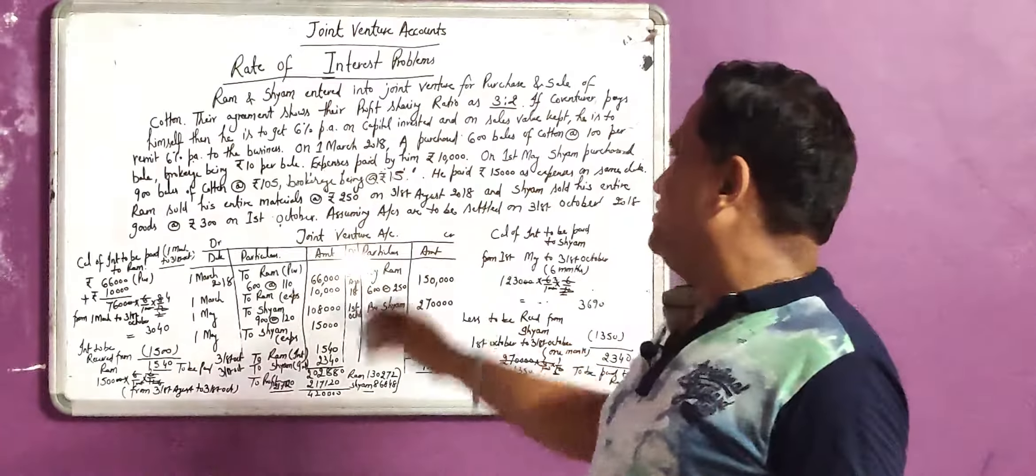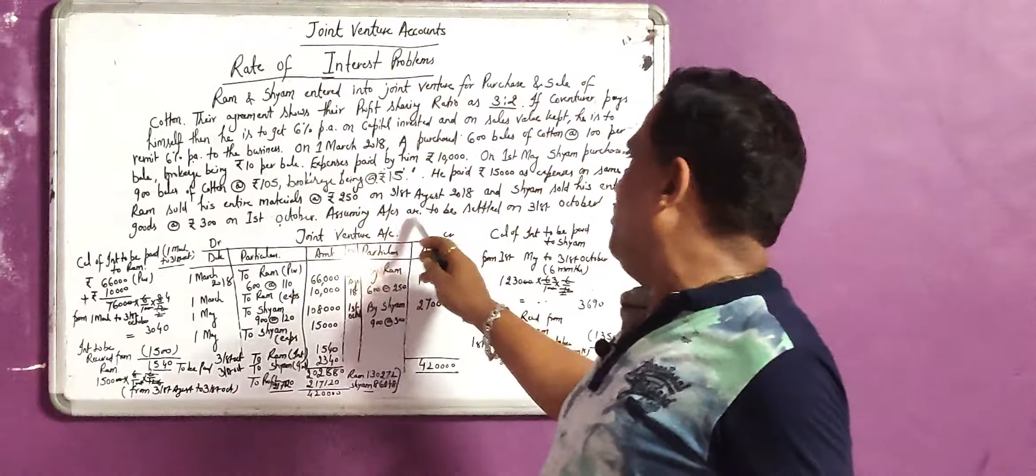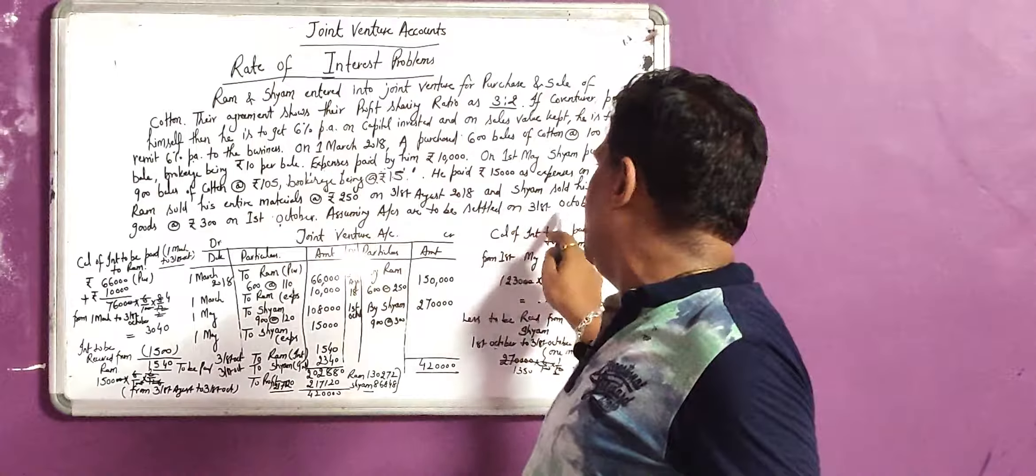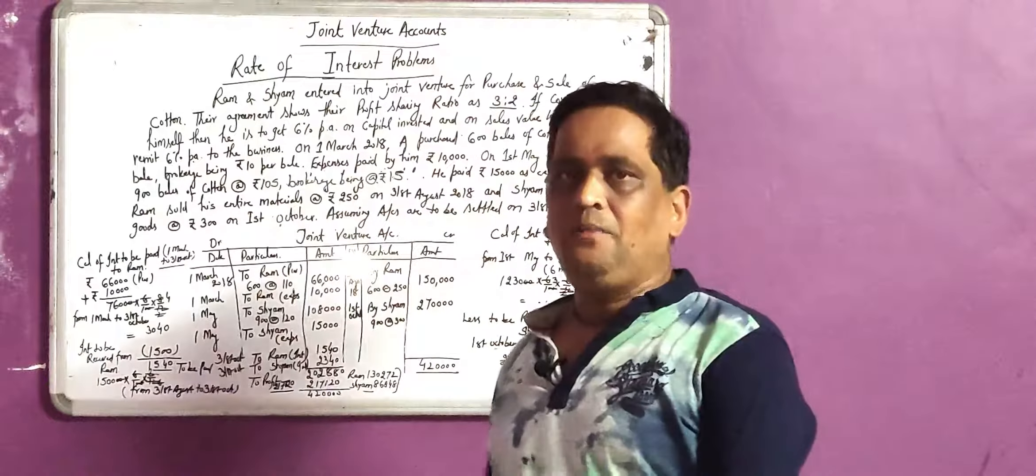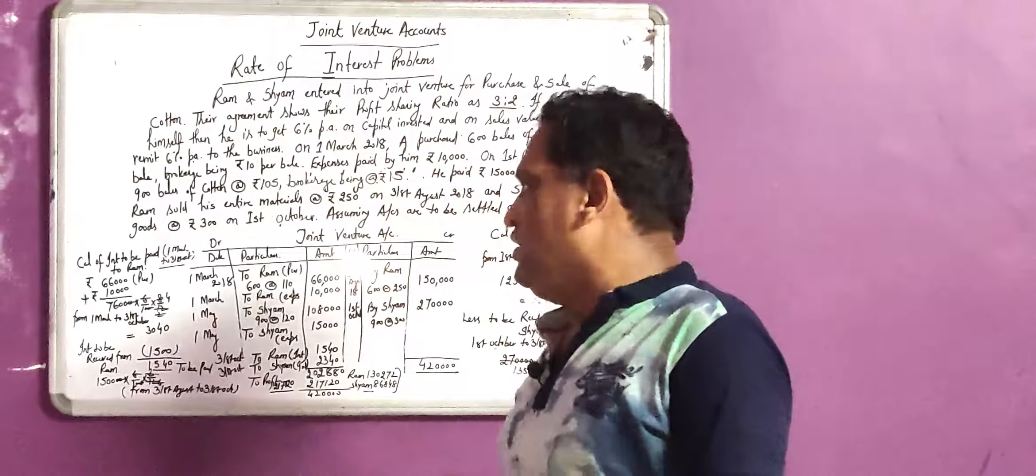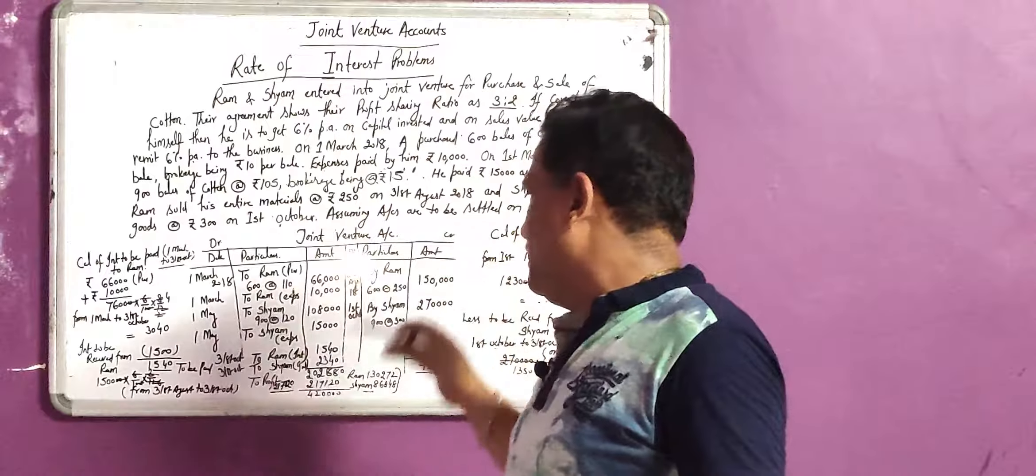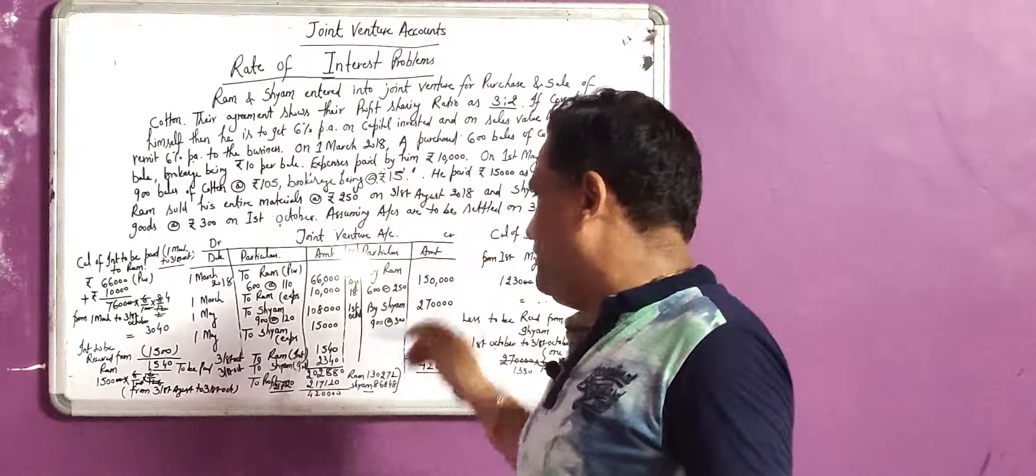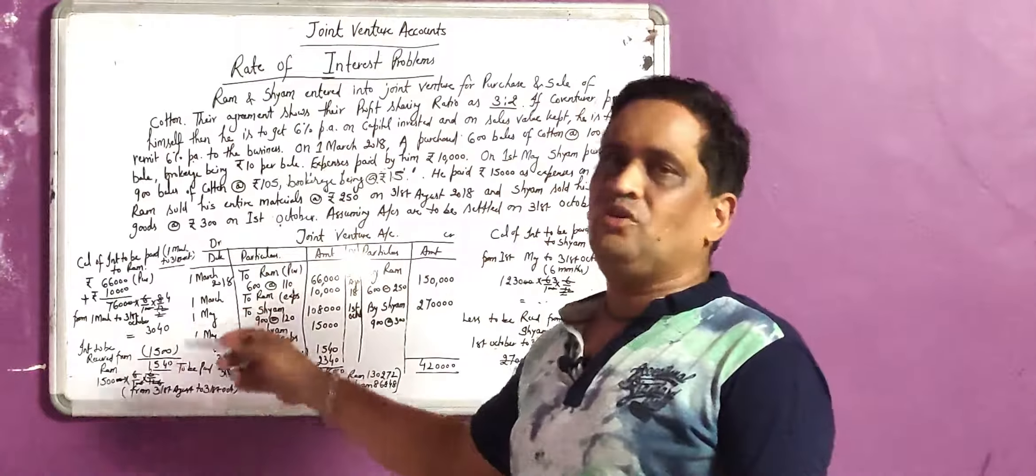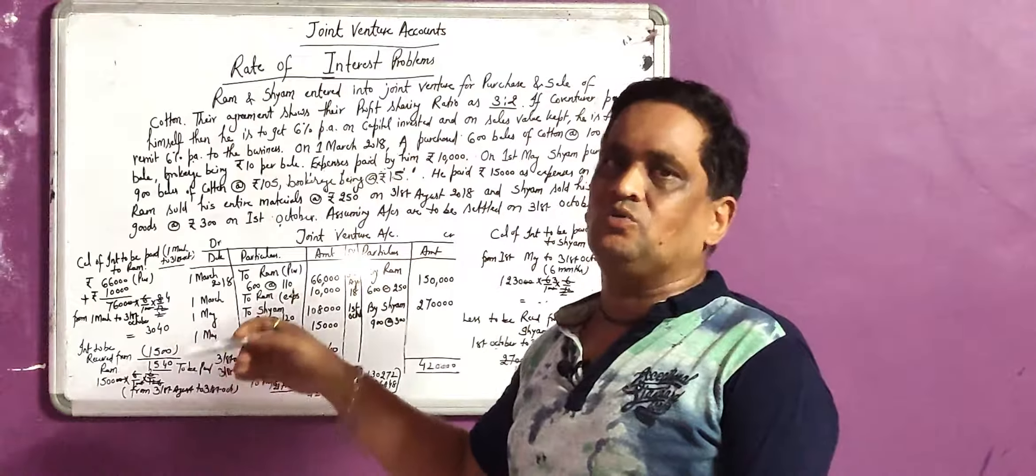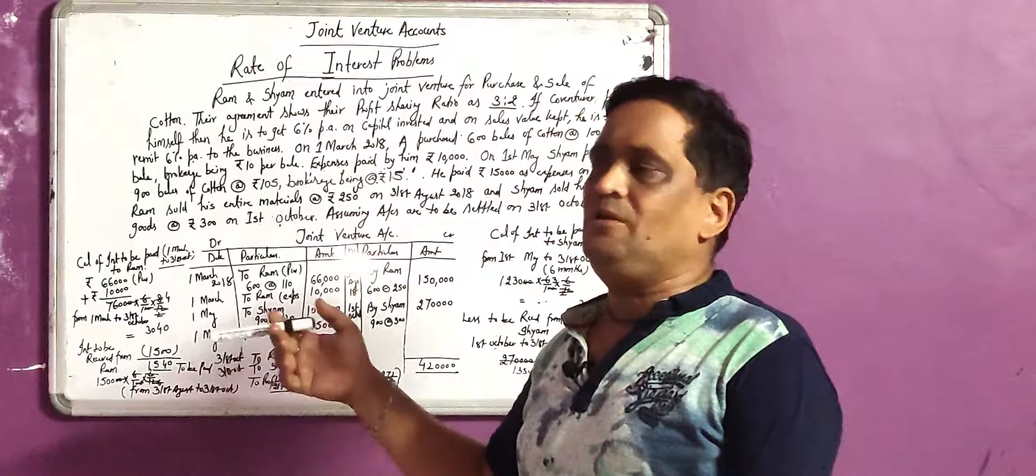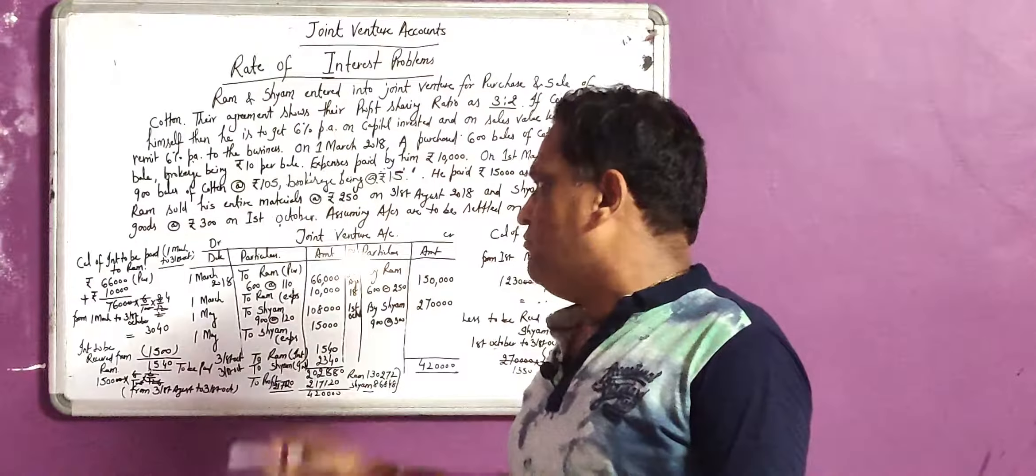It is written in the assumption that accounts are to be settled on 31st October 2018. Now the sale price is credited. Now I have to calculate the interest payable to each venturer or receivable from each venturer.